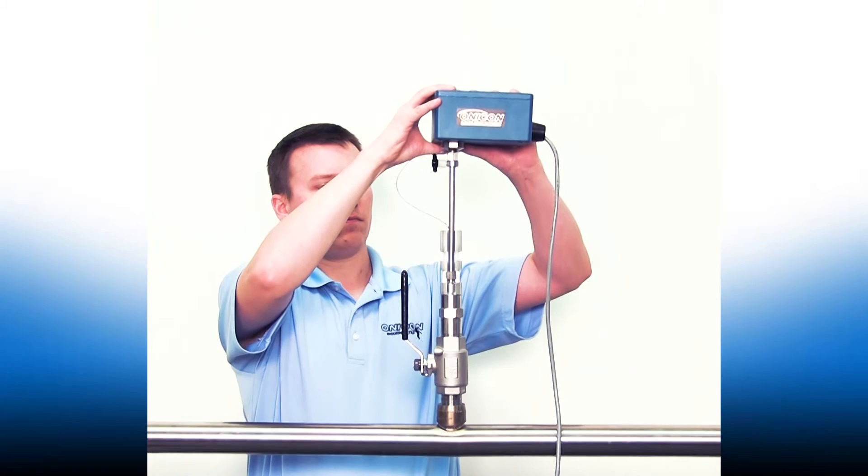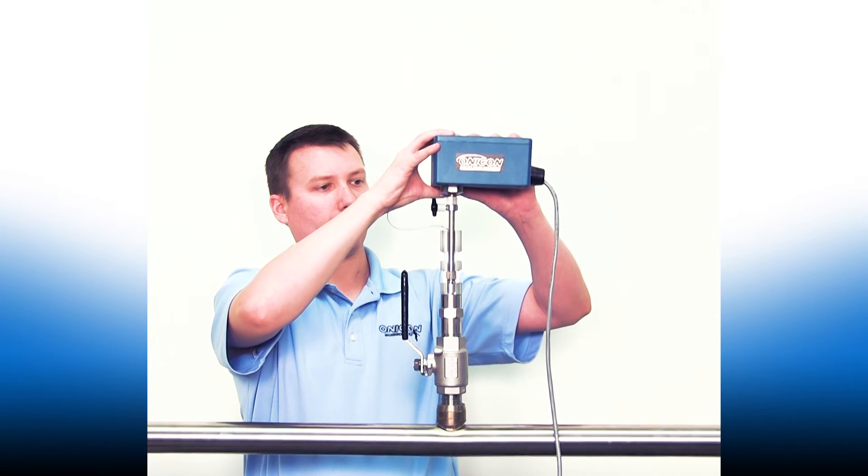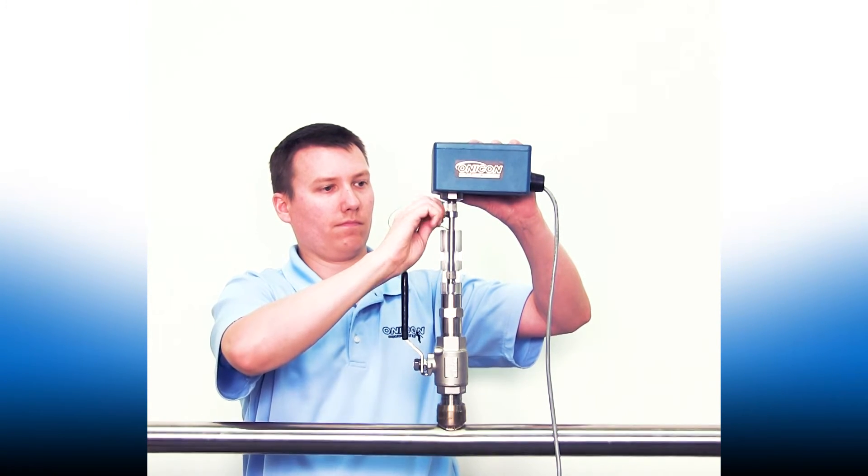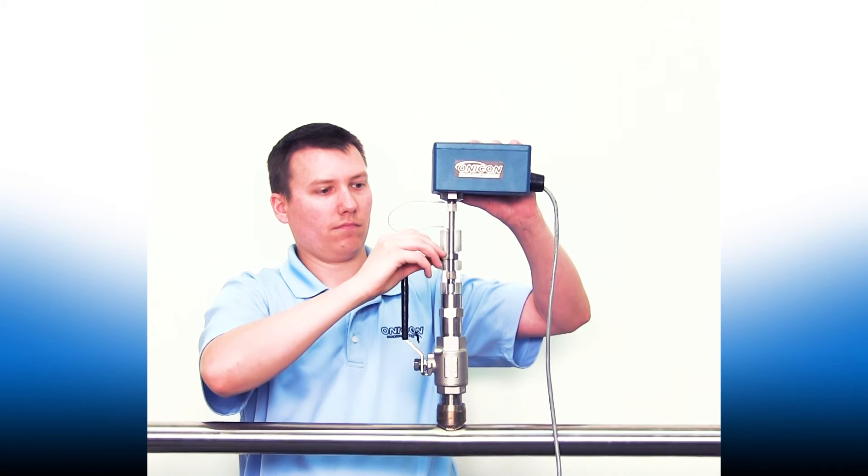Gently insert the meter until it touches the opposite side of the pipe. Loosen the collar and slide it into the top slot on the alignment tool.